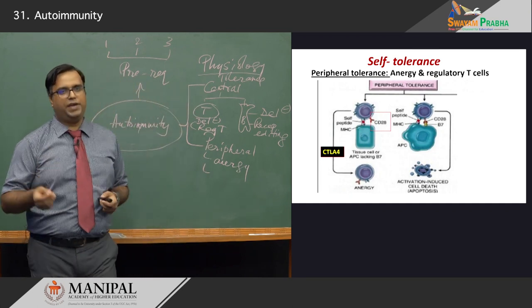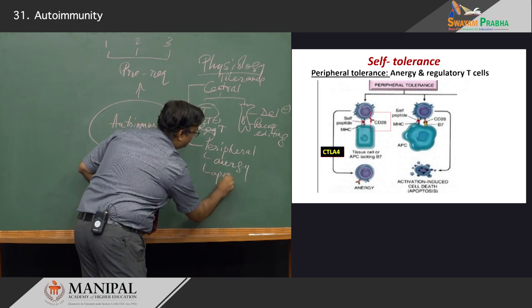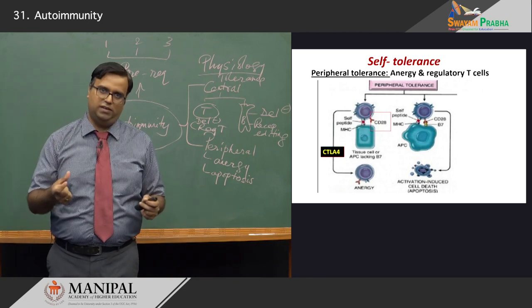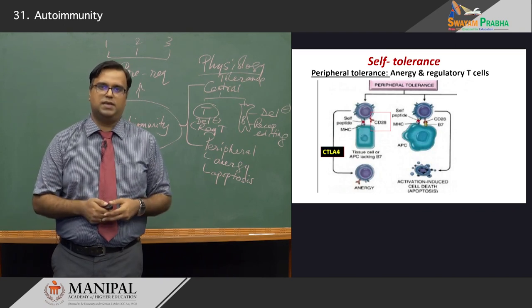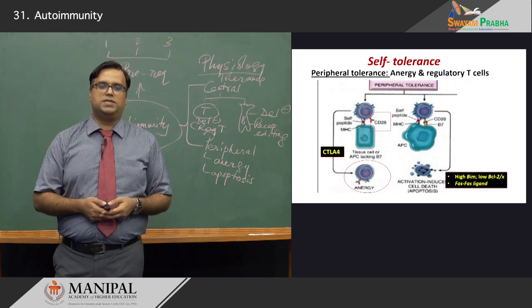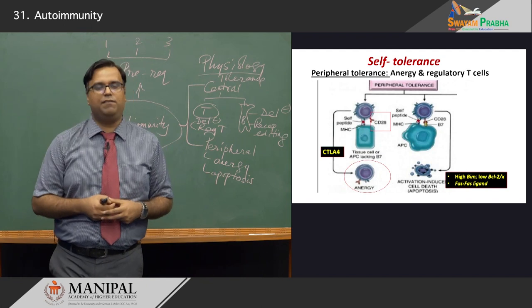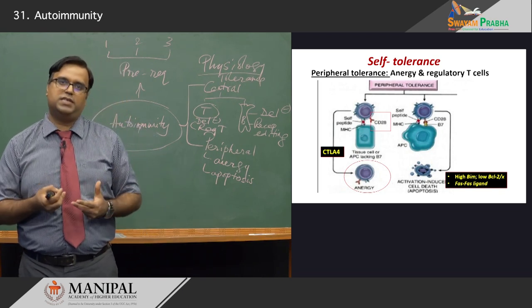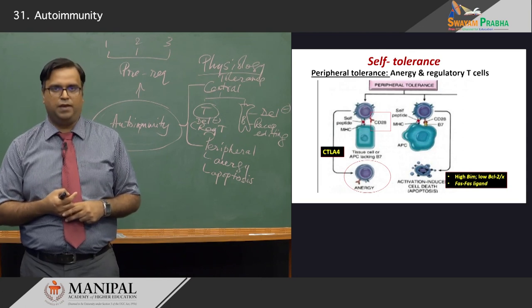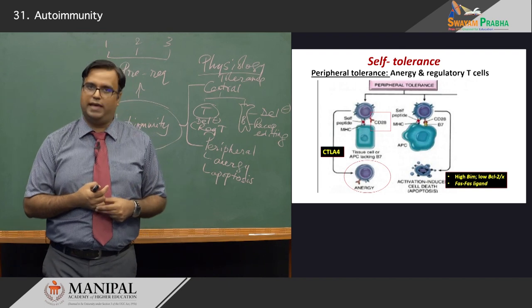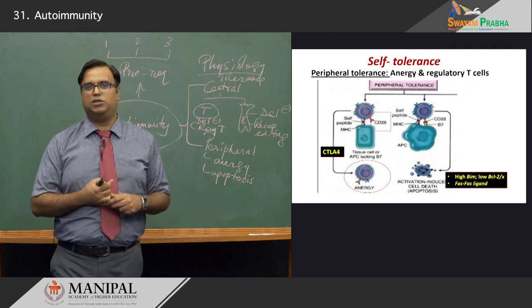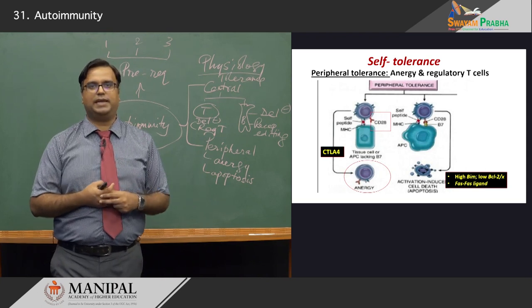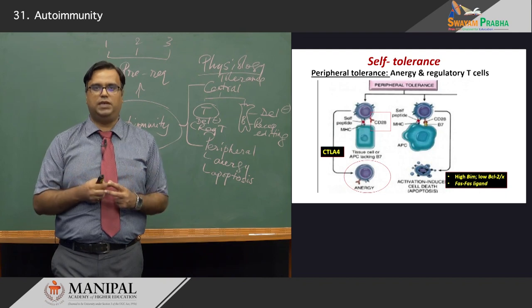Yet another important mechanism is apoptosis, or programmed cell death. Those cells which have escaped anergy will be rendered towards apoptosis. There is an up-regulation of pro-apoptotic molecules such as BIM and down-regulation of anti-apoptotic molecules such as BCL2 and BCLX, creating an overdrive of pro-apoptotic pathways. Also, there is up-regulation of FAS-FAS ligand, which induces the death domain pathway of apoptosis. All T-lymphocytes which escaped anergy may be checked at this second point by means of apoptosis, thereby reducing the pool of self-reactive T-lymphocytes.